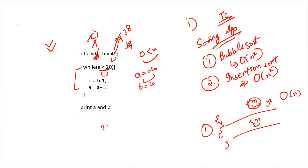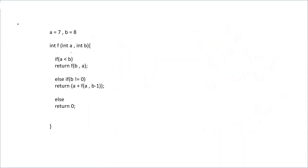Some questions are direct where you use pattern recognition rather than solving sequentially. If you trace every step one by one — incrementing a and decrementing b — you waste time. Since both start 20 apart and move toward each other at the same rate, you can immediately see they will both equal 20. Time matters a lot during the test.